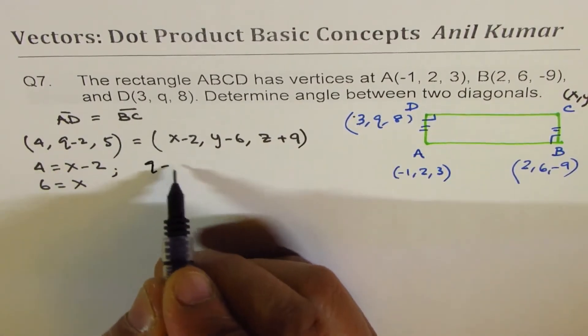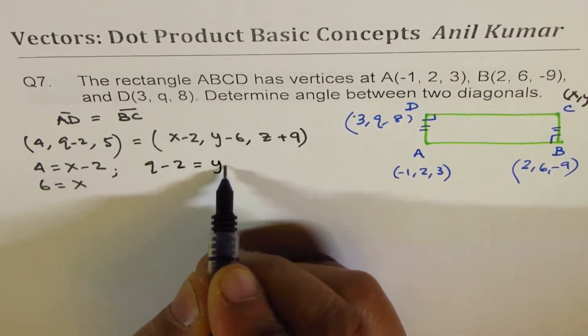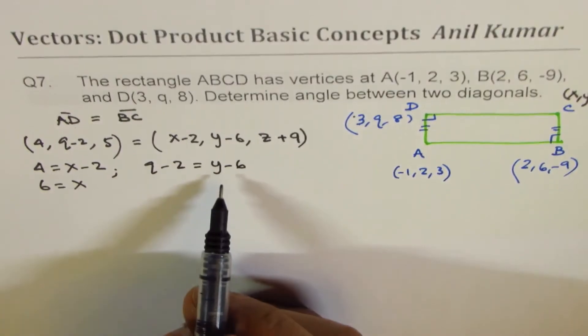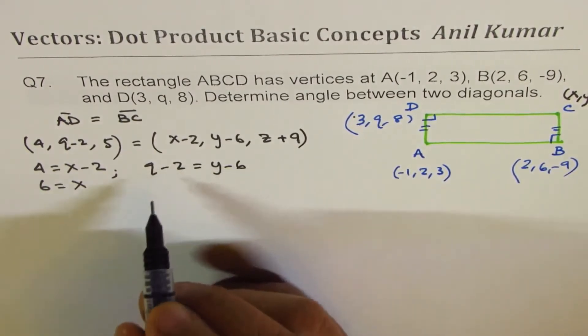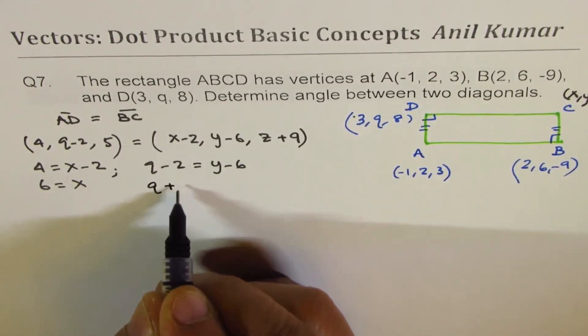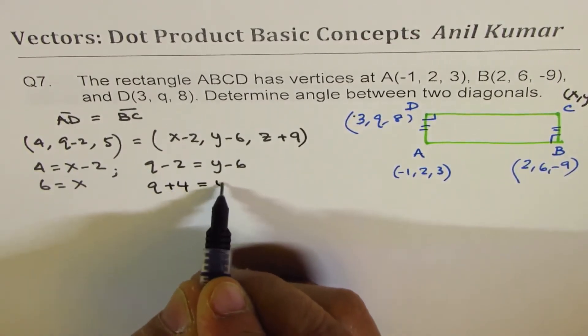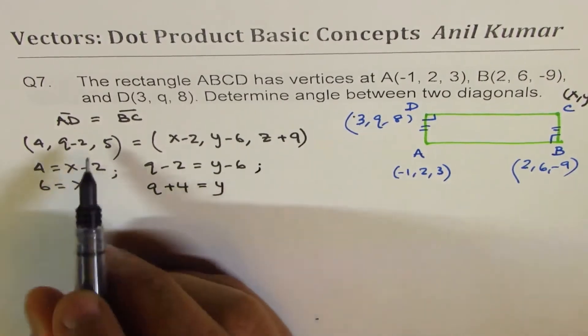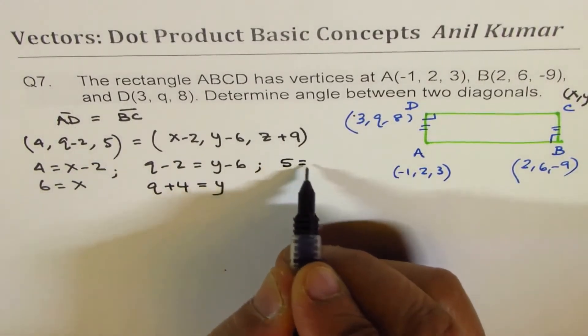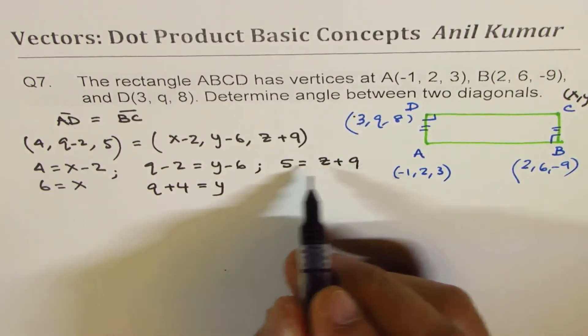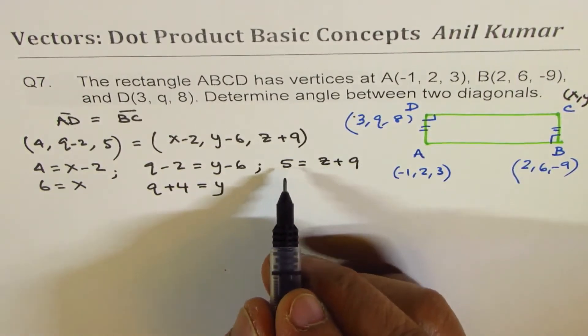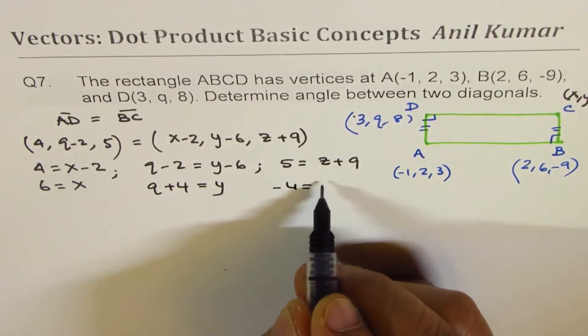Then we have Q-2 = Y-6. So we get Y in terms of Q. Taking 6 to this side, we get Y = Q+4. The last one is 5 = Z+9, or Z = -4.